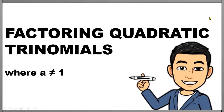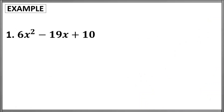Hello everyone, this is the second part of factoring quadratic trinomials. In this case, we will consider quadratic trinomials whose leading coefficient is no longer 1. Let's have an example: 6x squared minus 19x plus 10. As you can see, the coefficient of x squared this time is no longer 1 but 6.